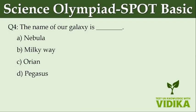The name of our galaxy is dash. Option A: Nebula. Option B: Milky Way. Option C: Orion. Option D: Pegasus.